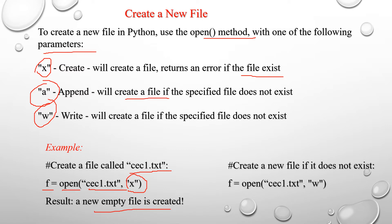Consider one more example: create a new file if it does not exist. Specify file variable f equal to open, with file name cec1.txt and mode 'w' (write mode). This will create a new empty file. Let's try this in the Python interpreter.